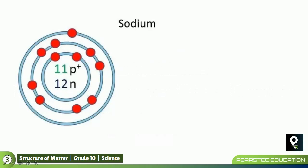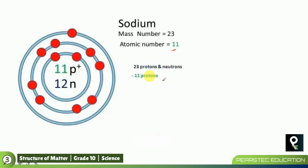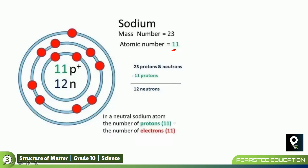Let's talk about sodium. Sodium has 11 protons and 12 neutrons. The atomic number equals the number of protons, so the atomic number of sodium is 11. The mass number is calculated as protons plus neutrons: 11 + 12 = 23. So if somebody asks the atomic number, you find the number of protons; if they ask the mass number, you calculate both protons and neutrons together.